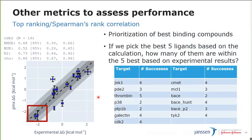We can also look at other metrics to assess the performance, especially in view of drug design. We are usually not interested in absolute delta G values but in the order of values — prioritization of best binding compounds for synthesis. I made a small experiment: if we take the five best ligands based on the calculation, how many are within the five best experimental results? In many cases, we have at least three hits which are also among the best experimental results.